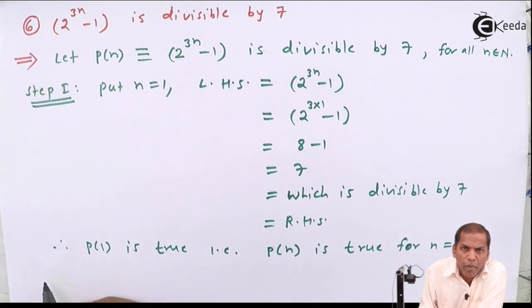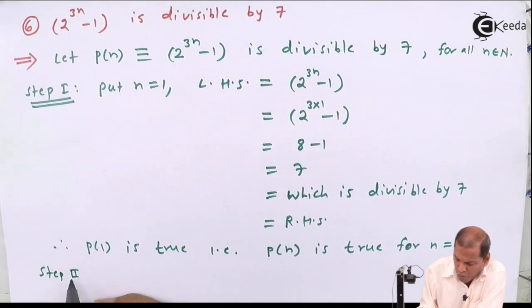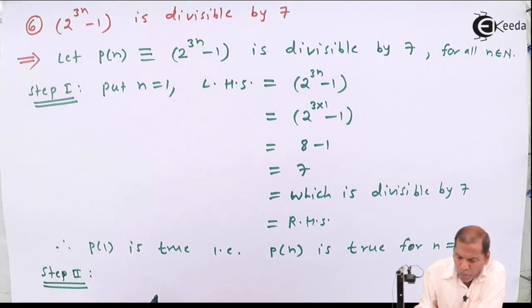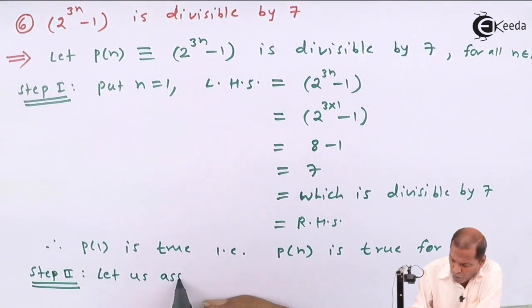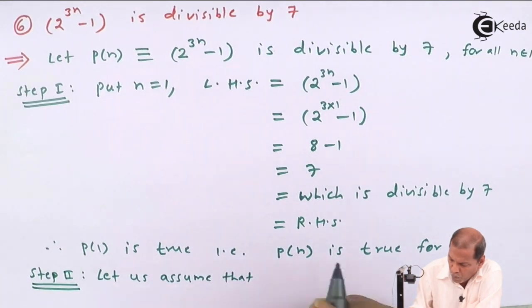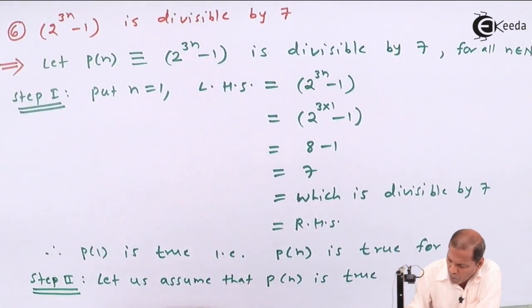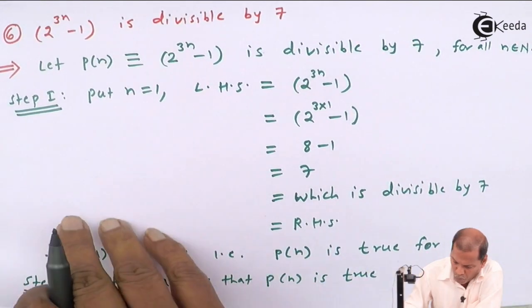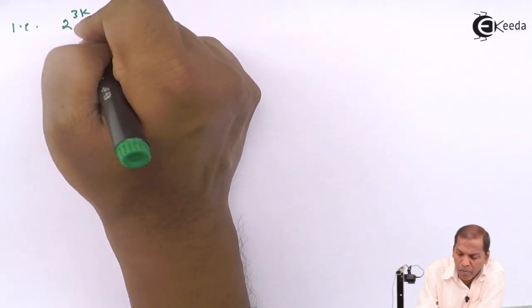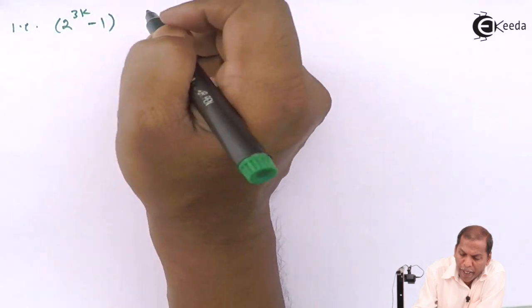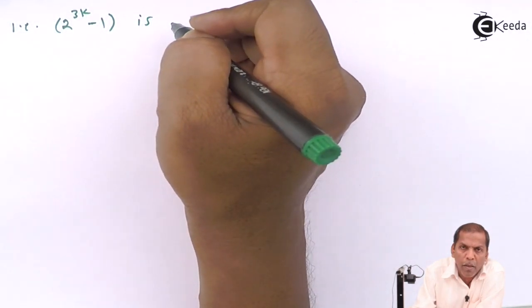Now consider step number 2. Let us assume that P(n) is true for n equal to k. That is, 2 raised to 3k minus 1 is divisible by 7.